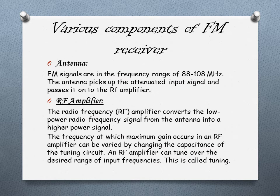Now I am going to explain the various components of the FM receiver. First, the antenna. FM signals are in the frequency range of 88 to 108 MHz. The antenna picks up the attenuated input signal and passes it to the RF amplifier. The RF amplifier converts the low power radio frequency signal from the antenna into a high power signal. The frequency at which maximum gain occurs can be varied by changing the capacitance of the tuning circuit. An RF amplifier can tune over the desired range of input frequencies — this is called tuning. This variable capacitance is also used as a bandpass filter.